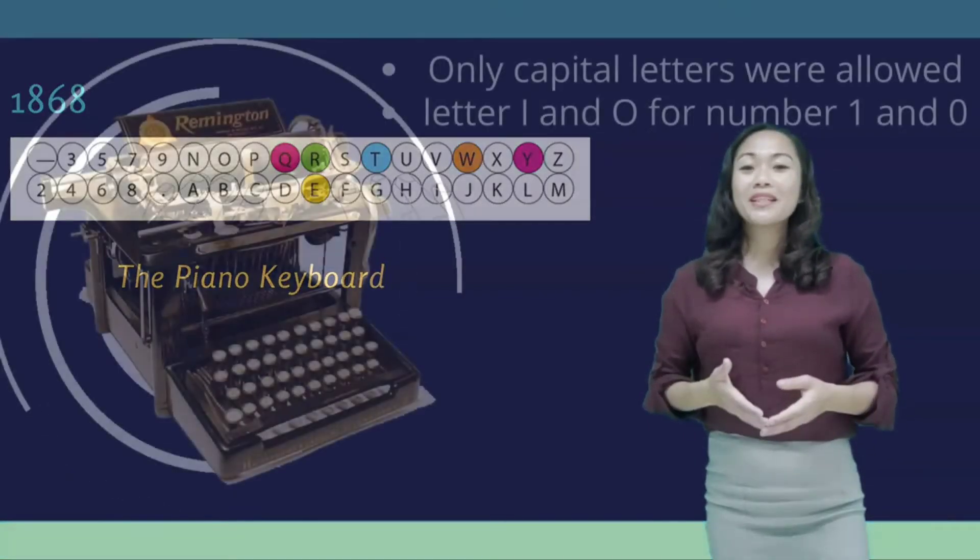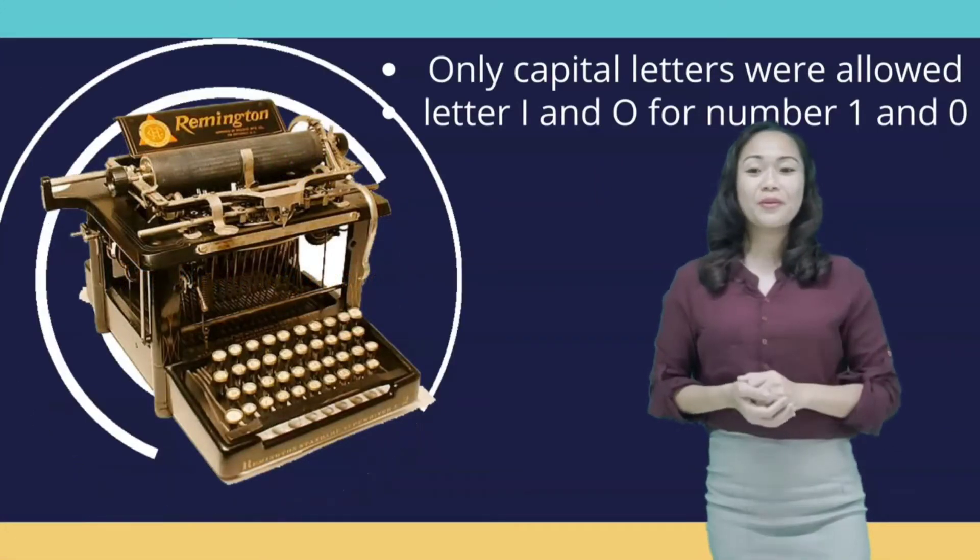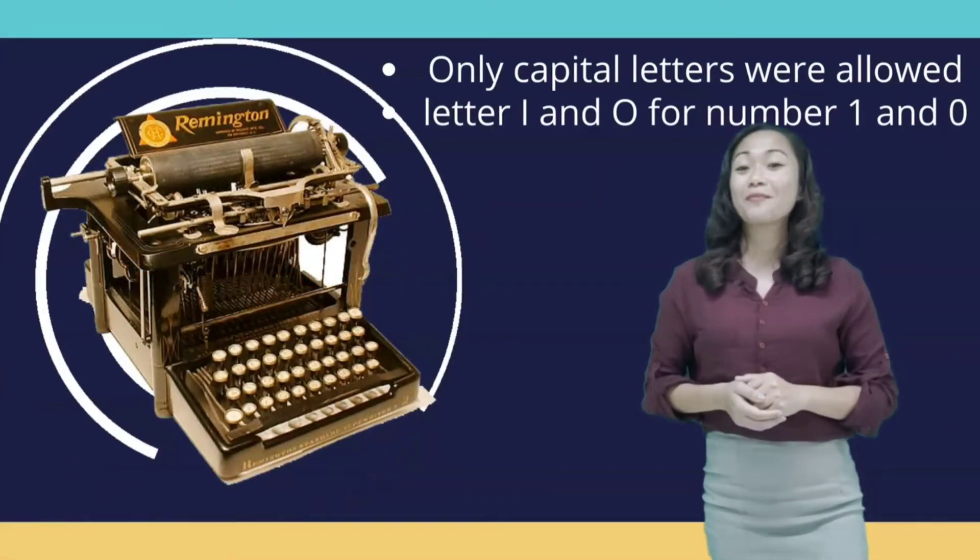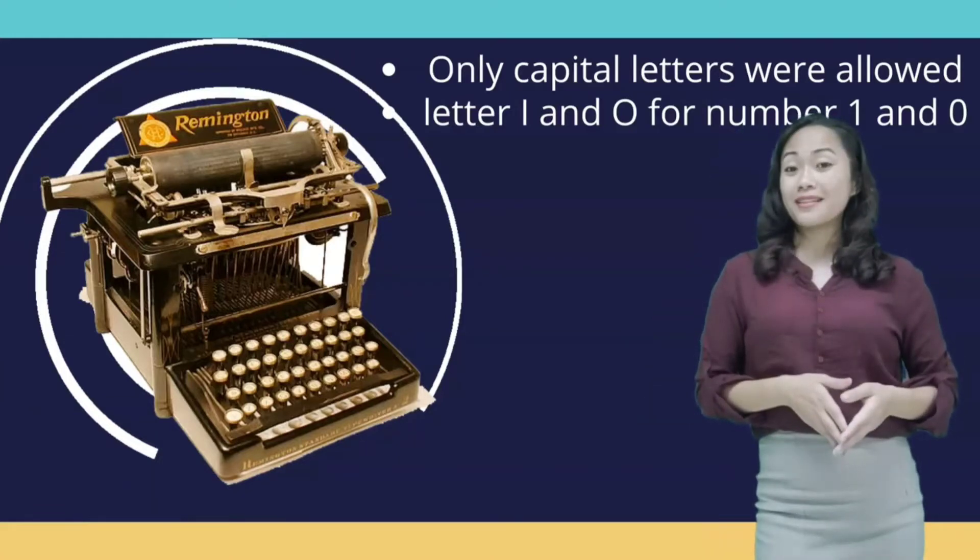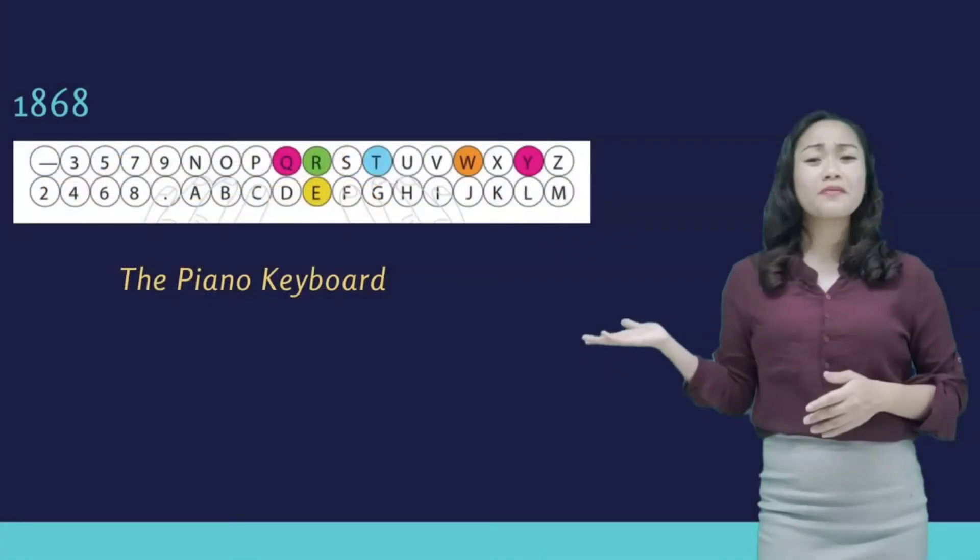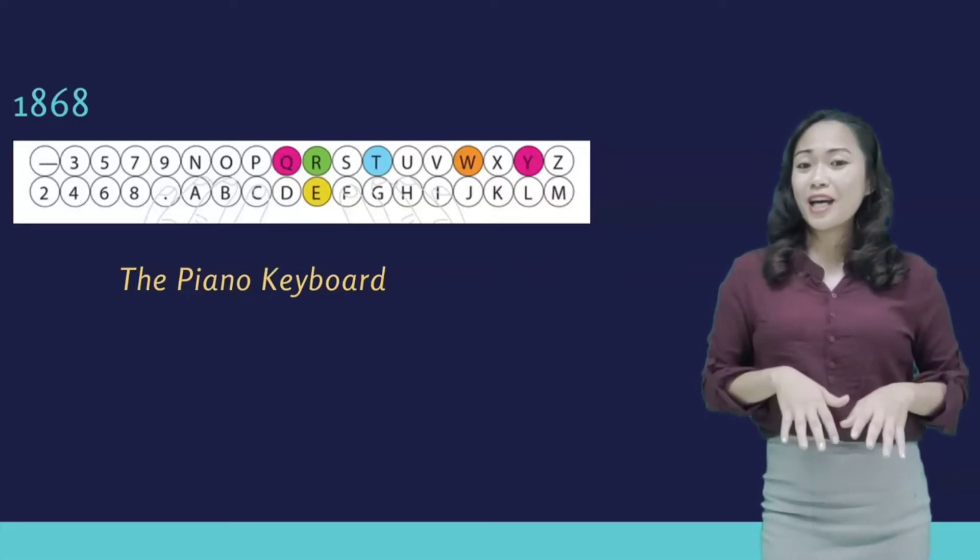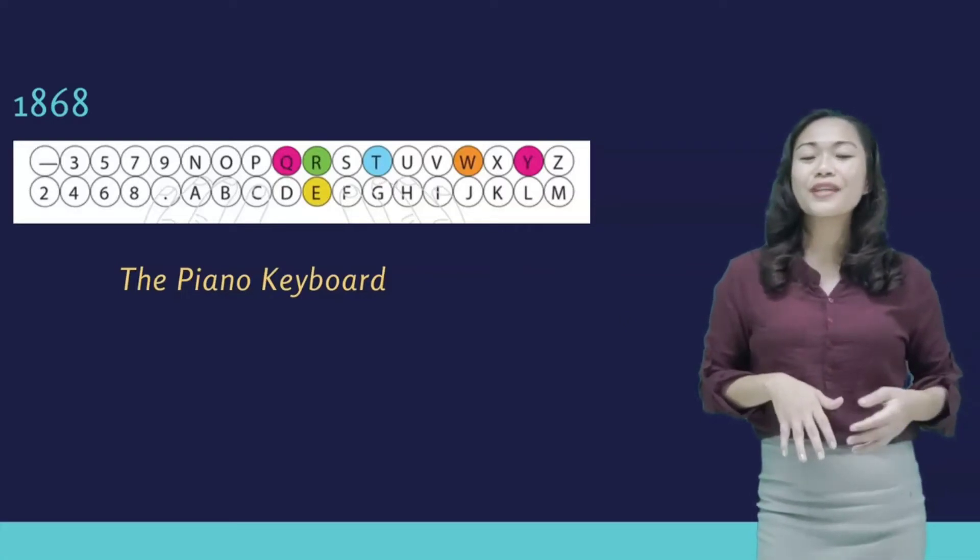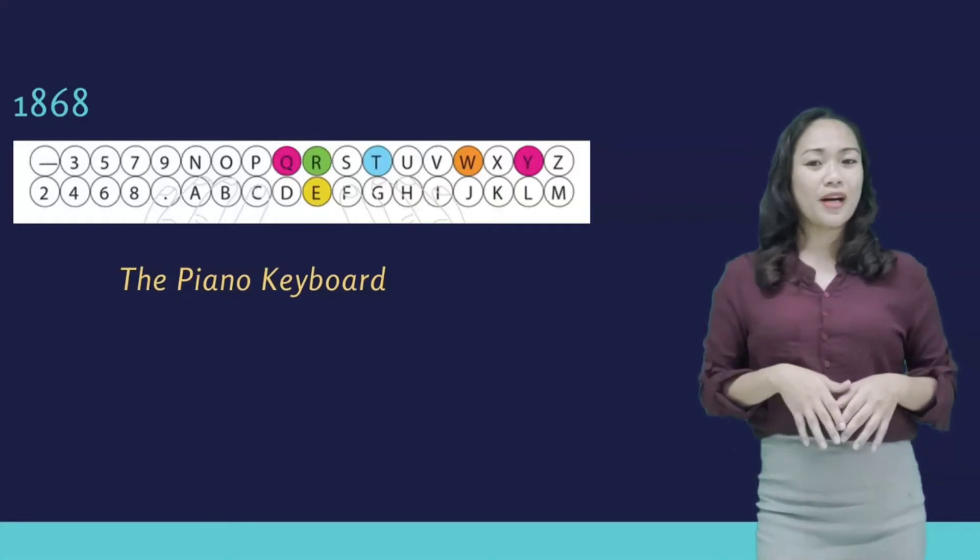Only capital letters were allowed, while numbers 1 and 0 were printed with the help of letters I and O. It was acceptable at the beginning, but later this typewriter became problematic since the speed of typing grew. Some levers couldn't make it in time to return to their initial places, so they were clinging with one another.